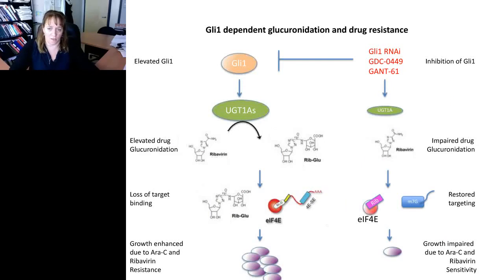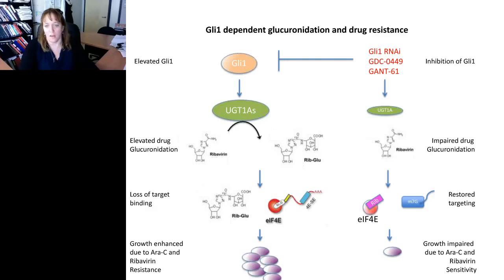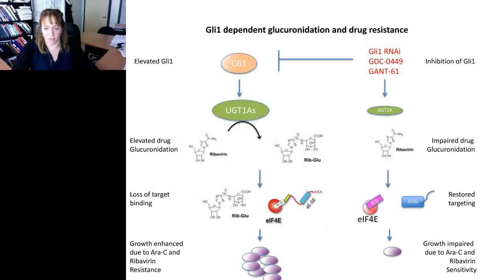Our model, which we call inducible drug glucuronidation, is as follows: elevated GLI-1 leads to elevated UGT1As, which leads to glucuronidation that impairs the 4E interaction and allows enhanced growth. You could substitute other drugs and targets in the same way. To inhibit this, we use GLI-1 RNAi, vismodegib GDC-0449, or a direct GLI-1 inhibitor called GANT-61. This reduces UGT1A levels, impairs drug glucuronidation, restores drug targeting, and impairs growth.